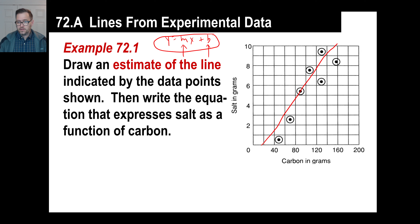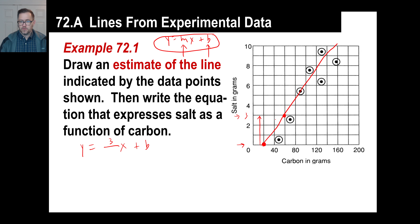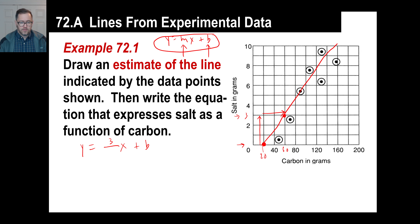We need a slope here. Let's say this is a point right here and that's another point. We know it's positive - it's going up to the right. The rise is the top part of the fraction, and it looks like we go up three. So the top of the fraction is three. In the same space, we went from 20 over to 60 on the bottom, so that's 40. The slope is 3 over 40.